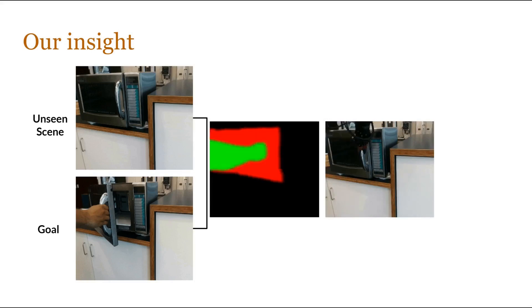We instantiate a human plan in the form of semantic masks of the hand and the object being interacted with, thereby ignoring unnecessary details in the background.